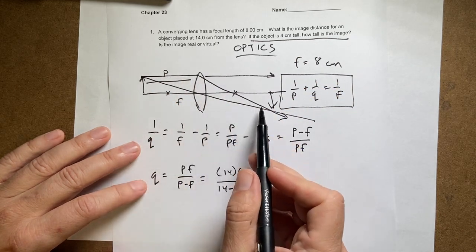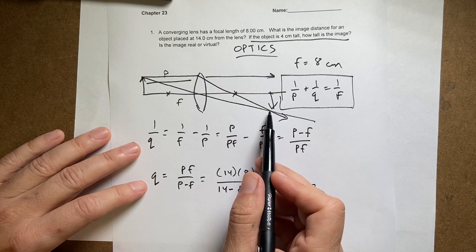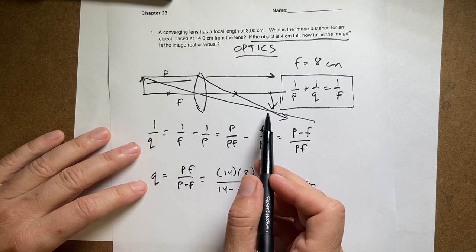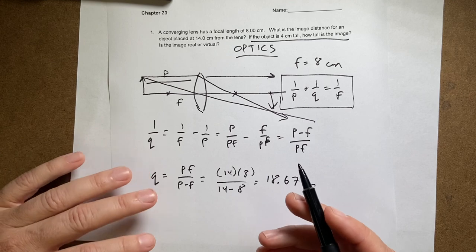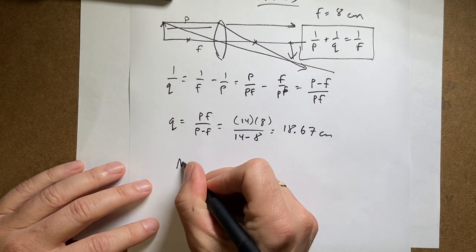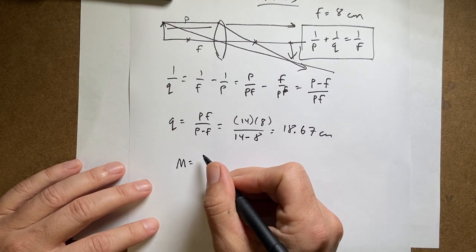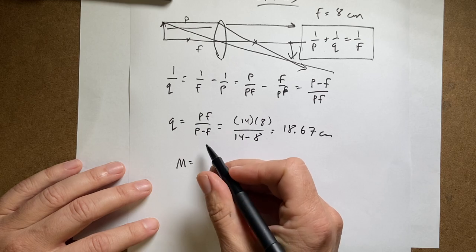First, is it real or virtual? This is going to be a real image because I have a positive image distance. You could also just sketch that out. Now the magnification is equal to—oh, I'm going to get this backwards, I'm pretty sure.